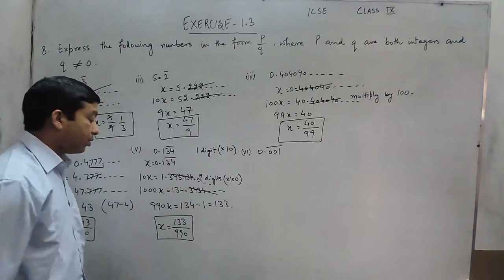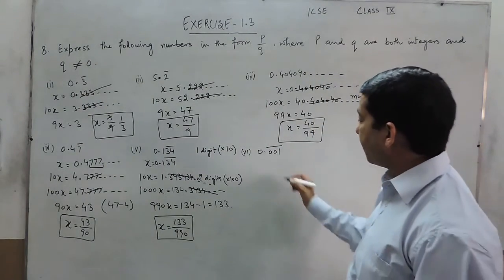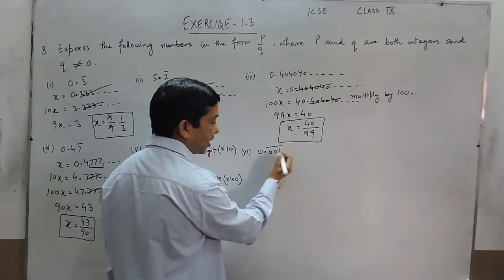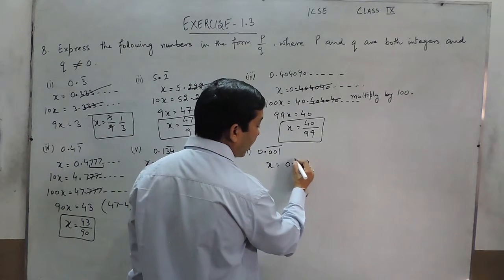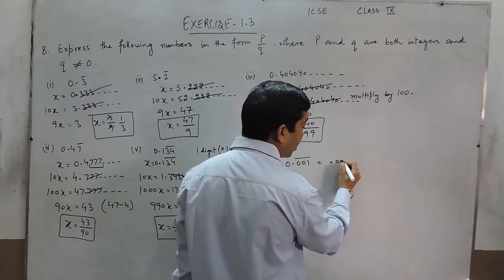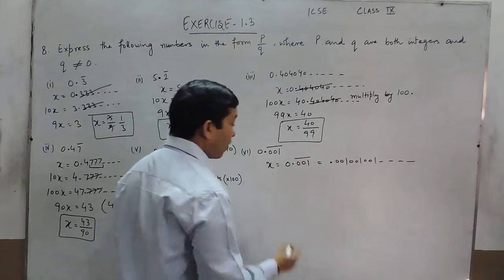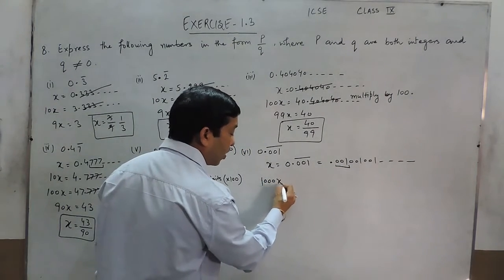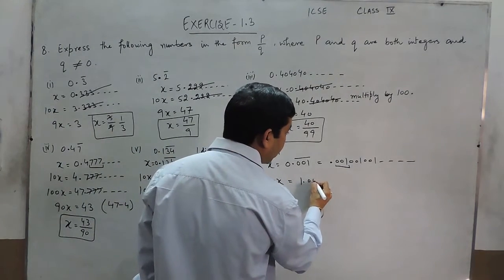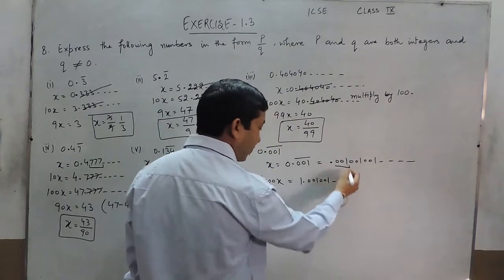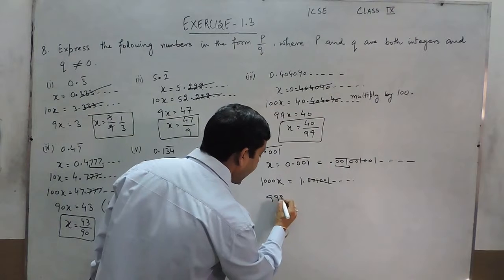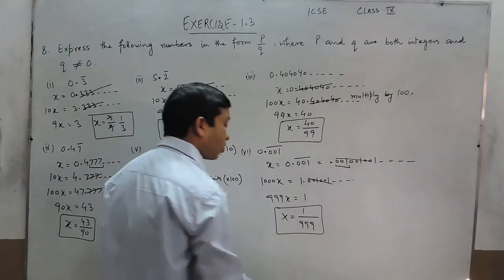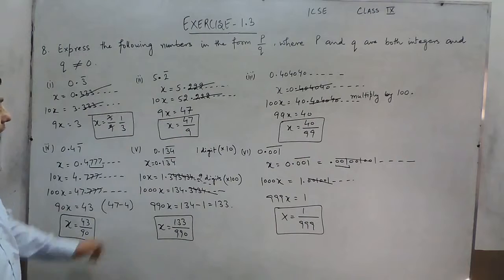So the value of p is 133 and the value of q is 990. Here it is very clear that all the digits after the decimal places are repeating. So x comes out to be 0.001 bar, which can be written as 0.001001001 and so on. When there are three digits repeating we multiply by 1000. So 1000x becomes 1.001001001 and so on. Subtracting the two, 999x becomes 1 and the value of x becomes 1 upon 999.